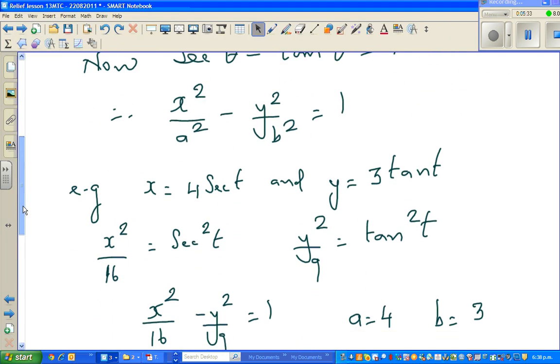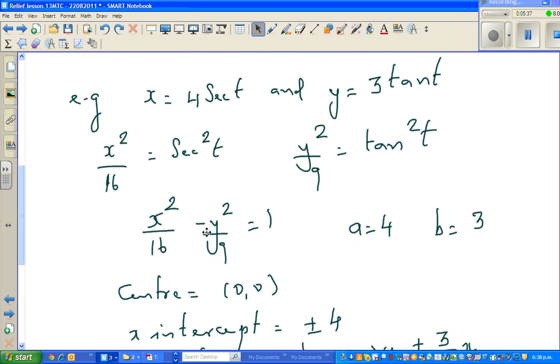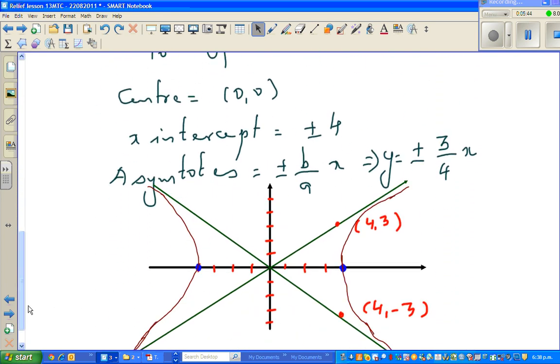So now if you convert this into the Cartesian form, it'll be x squared over 16 minus y squared over 9 is equal to 1.